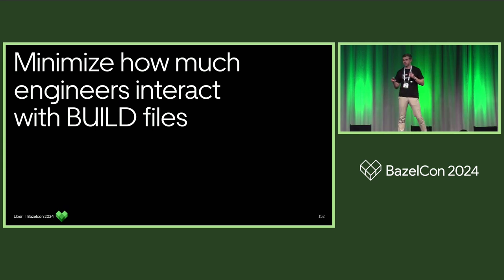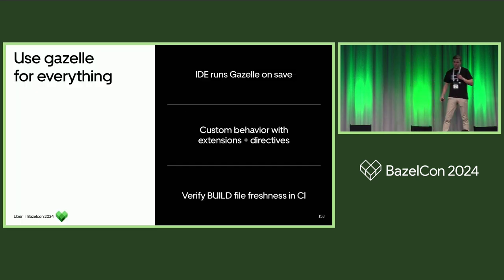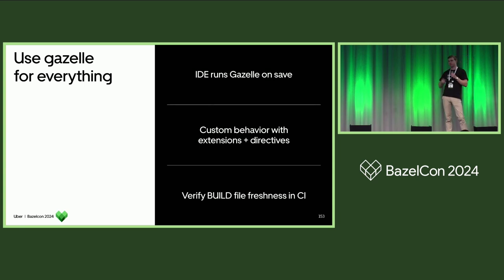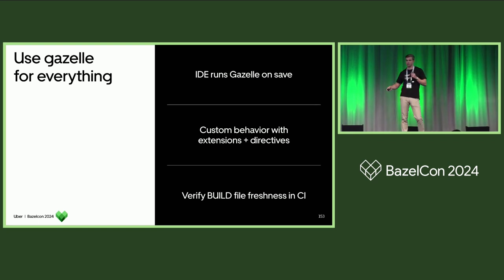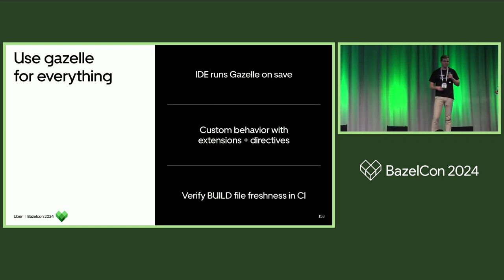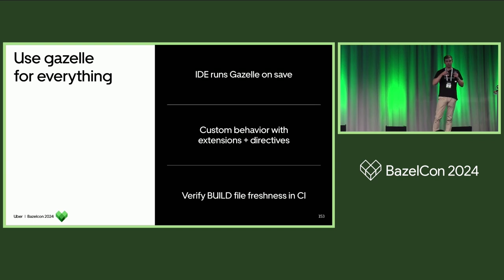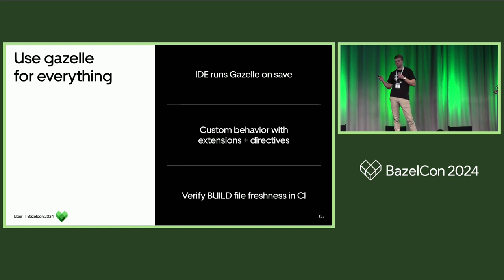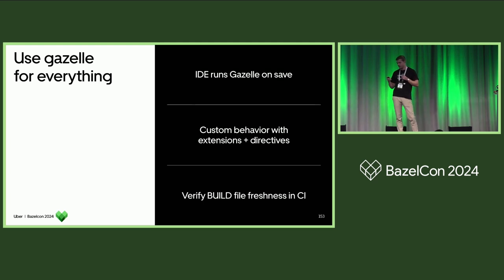This has really become our philosophy with Gazelle. Ideally, a user writes source code — they worry about just the logic, they save it, Gazelle runs on save and updates their build files for them. We can have them add custom directives, which are essentially comments, to do custom behavior and add extensions for certain things like our Uber deployed service configurations.